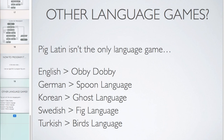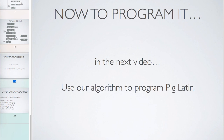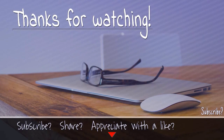Pig Latin isn't the only language game. There are other language games in English, like Abu Dhabi, and also in other languages, like the Spoon Language, the Ghost Language, the Fig Language, and the Birds Language, just to name a few. In the next video, we'll use our algorithm to actually program Pig Latin. You could also try making programs to create other language games from other languages — that would be a way to extend it and see if you really understood the concept, though it might require a little research to learn how those other language games work.